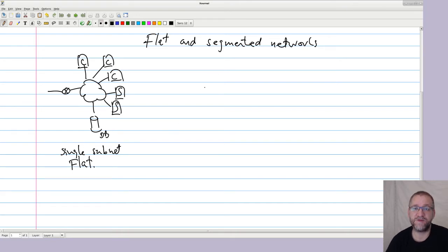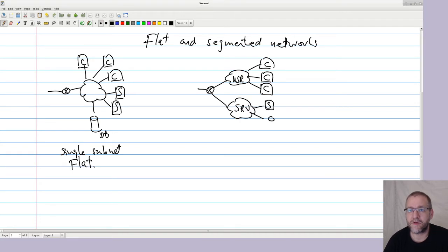So the alternative would be to make a network that looks something like this. So I will have a network up here. I usually call this network something like user. So that would be a network for all your user devices. We would probably have a network for our servers. And you have some sort of DMZ network for your internet facing things.